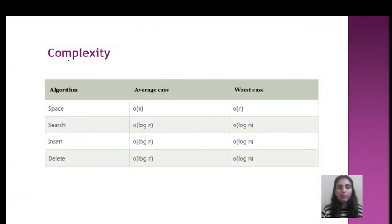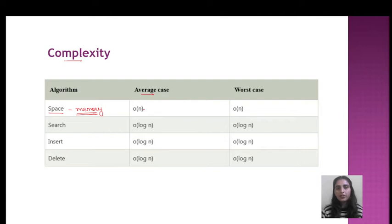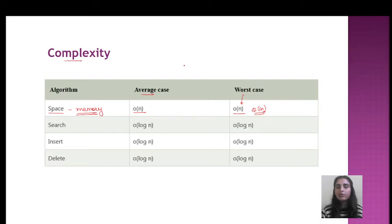So let's start with the complexity. In case of AVL tree, space complexity means the size of memory which the AVL tree uses. In the average case, it uses theta(n) space.